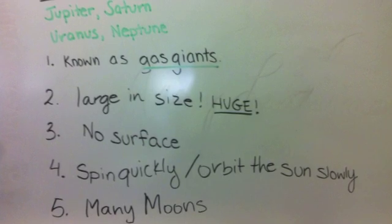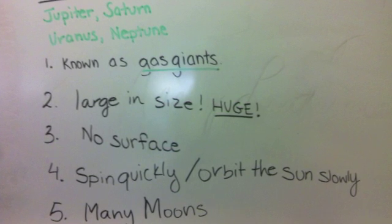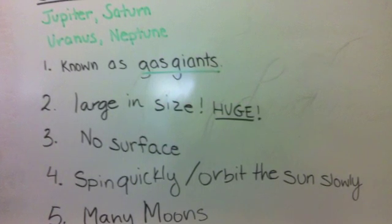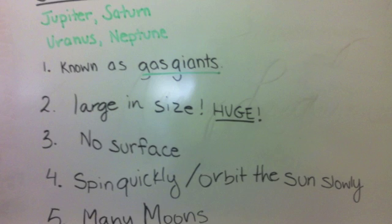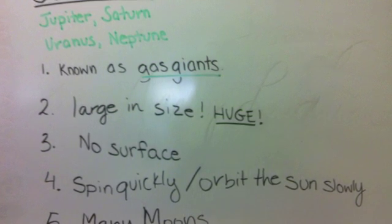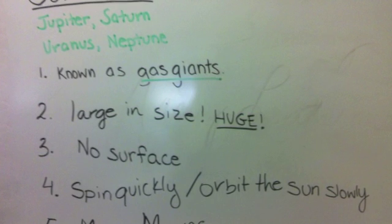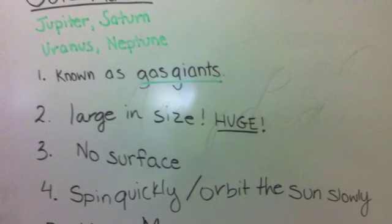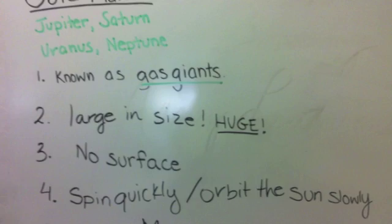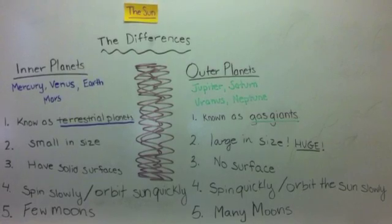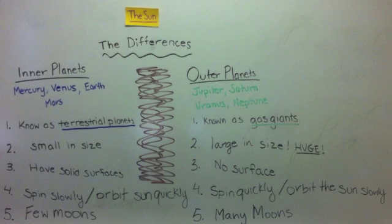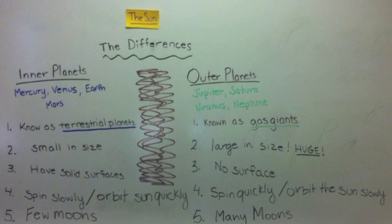The outer planets have many moons. Jupiter has 63, Saturn has 60, Uranus has 27, and Neptune has 13, compared to the inner planets' three moons altogether. Here is the finished product of the differences between inner and outer planets. I hope you enjoyed the lesson. Bring your questions to class tomorrow.